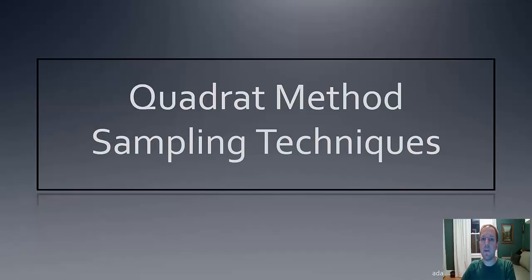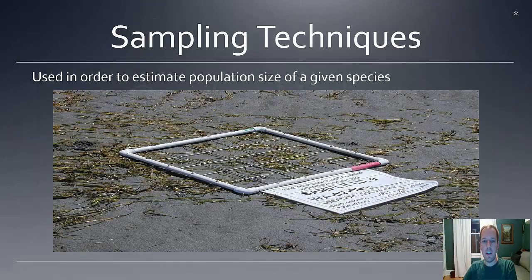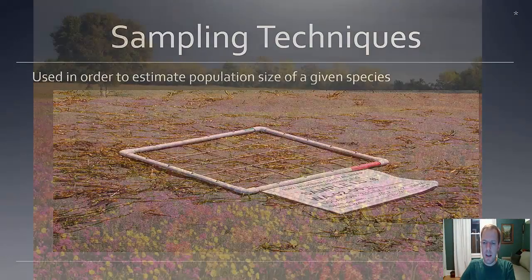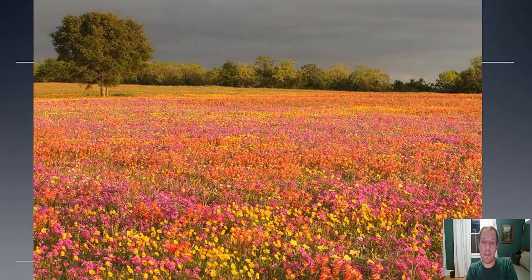Hello, Mr. Allman here, and this is your AllmanCast on the Quadrat Method sampling technique. Sampling techniques are necessary in order to be able to estimate the population size of a given species. This is a necessary tool for ecologists.